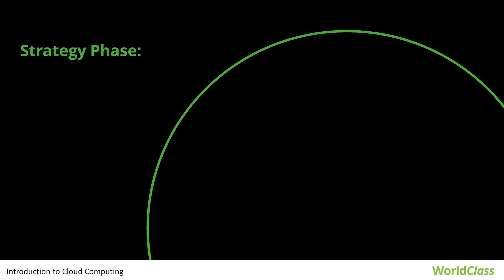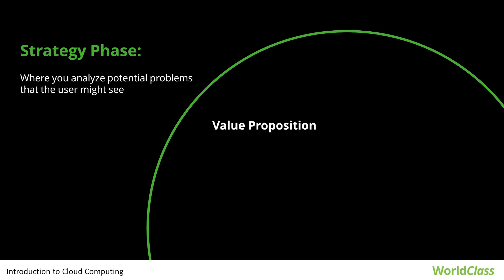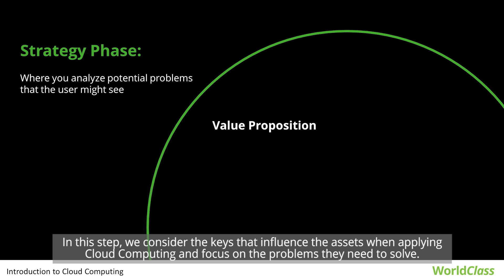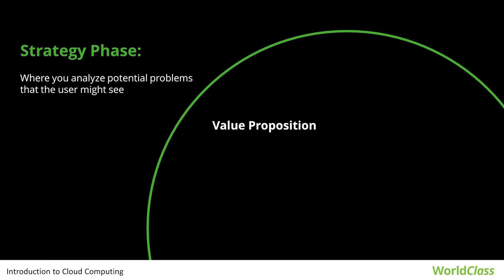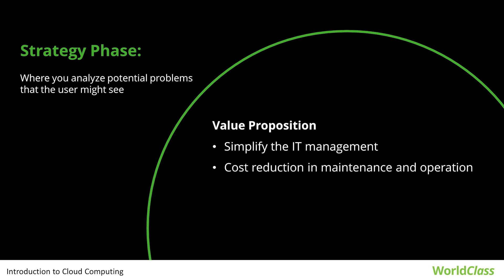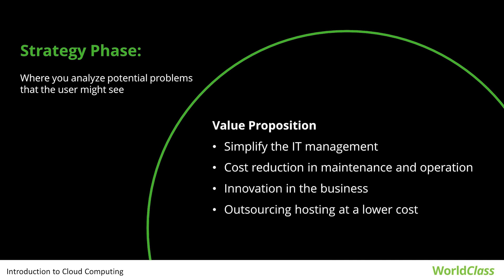Let's go over the strategy phase. This phase analyzes the problems the user might face, and there are two steps: value proposition, where we consider the keys that influence assets when applying cloud computing and focus on problems they need to solve. These factors include simplifying IT management, cost reduction in maintenance and operation, innovation in the business, outsourcing hosting at lower costs, and outsourcing hosting with high quality service. The second step is strategy planning, which will be based on the results of the analysis.